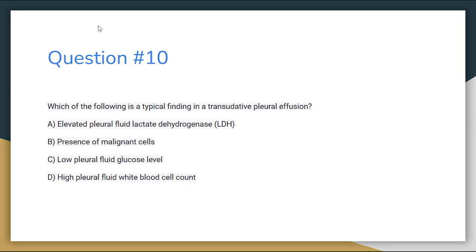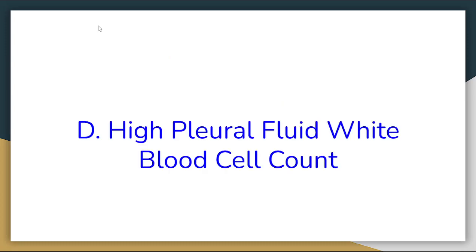Number 10. Which of the following is a typical finding in a transudative pleural effusion? Letter A: Elevated pleural fluid LDH. Letter B: Presence of malignant cells. Letter C: Low pleural fluid glucose levels. Or letter D: High pleural fluid white blood cell count. The correct answer for number 10 is letter D, High pleural fluid white blood cell count.